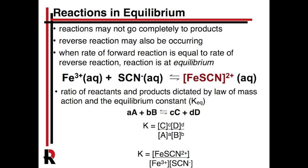When this happens — when there is this equalization of rates — this is called equilibrium. Now this doesn't mean that there's a one-to-one ratio. The ratio of the reactants... so here's the reaction we're going to be doing today: we take an aqueous iron solution and an aqueous compound we call thiocyanate, and we mix that and it makes a complex ion.